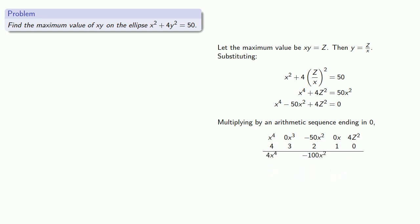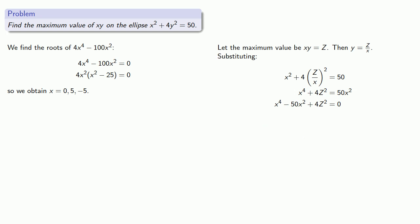And we find the roots and obtain 0, 5, and negative 5, what we might call our critical values.